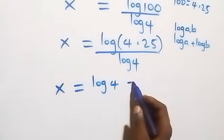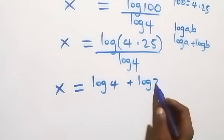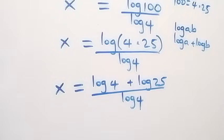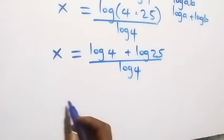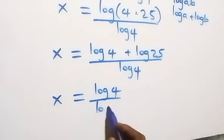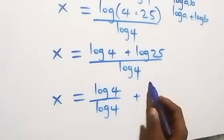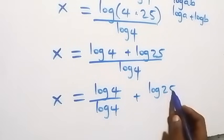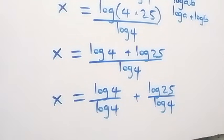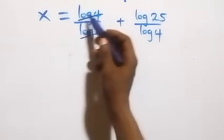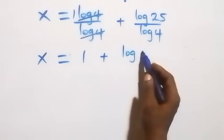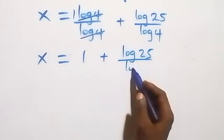So we have x equals log 4 plus log 25, all over log 4. We separate this into two fractions: x equals log 4 over log 4 plus log 25 over log 4. Since log 4 over log 4 equals 1, we now have x equals 1 plus log 25 over log 4.